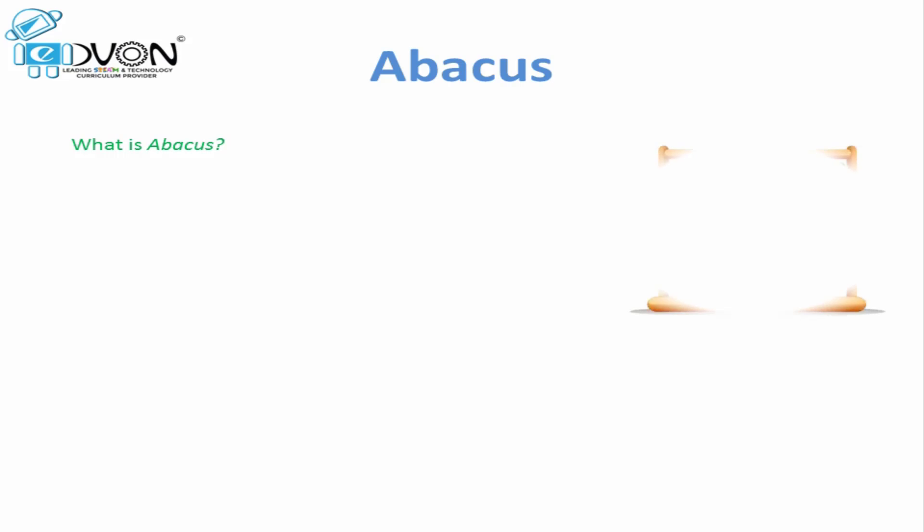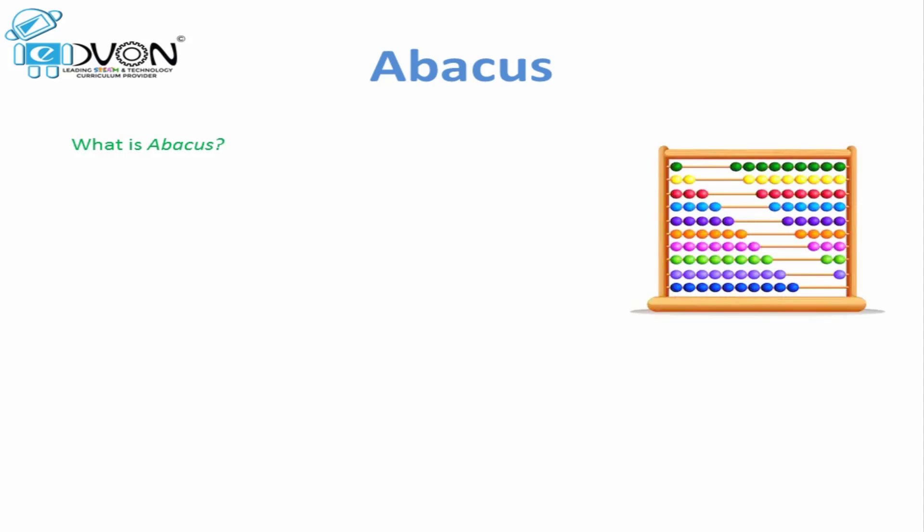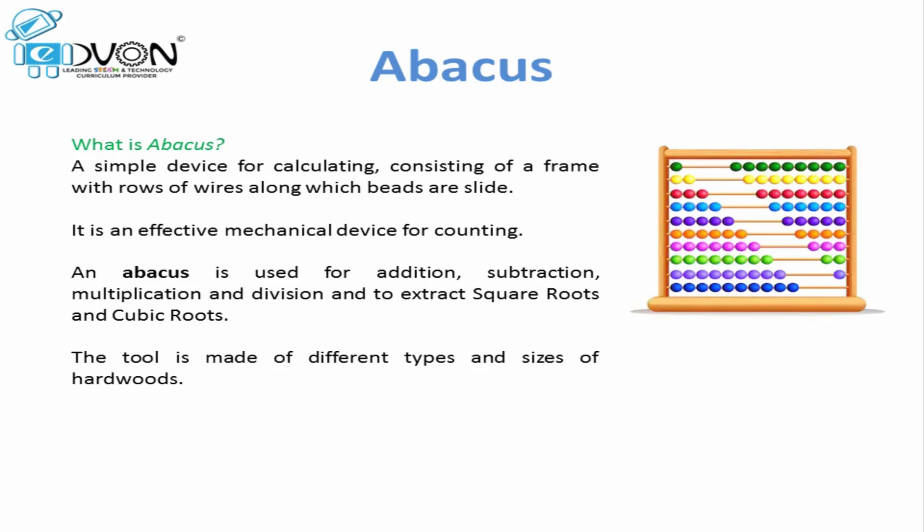Let's start our topic of the day — abacus. We all have seen abacus at least once in our life. Remember when we were in kindergarten or pre-juniors, we used to have an abacus which consists of ten beads placed horizontally. We have different forms of abacus; we also have abacus with vertical beads. But first, what is abacus? Abacus is a counting tool that consists of beads.